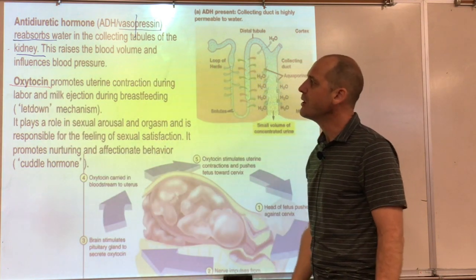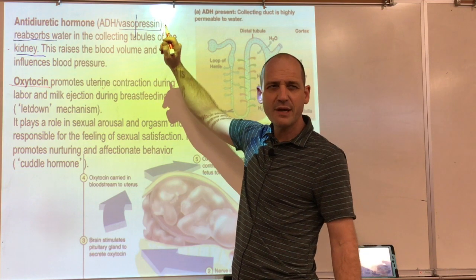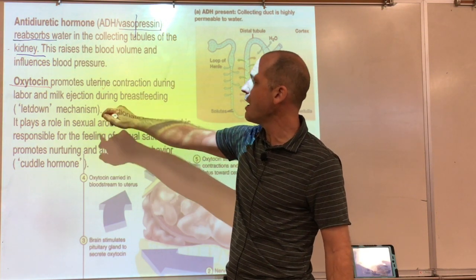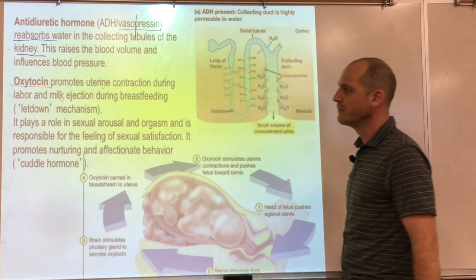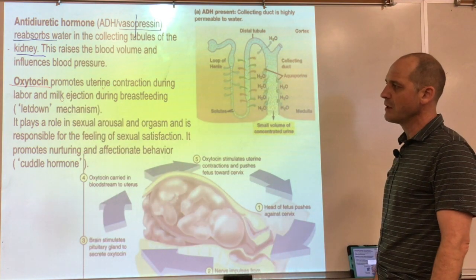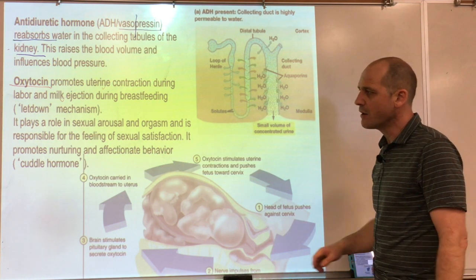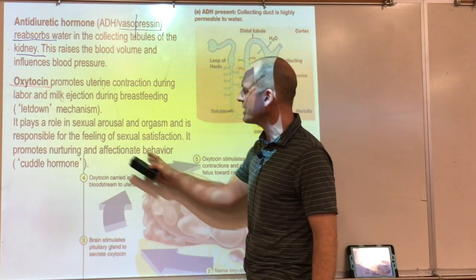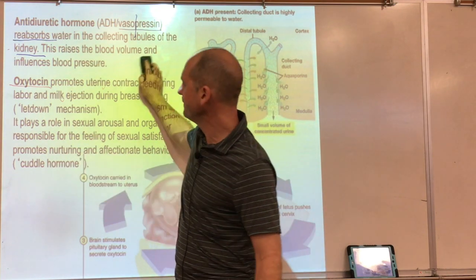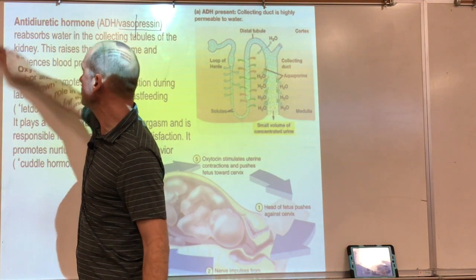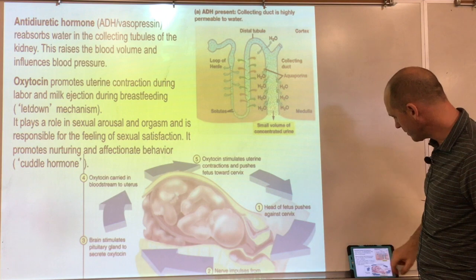Oxytocin promotes uterine contractions — well known from labor — and also stimulates milk ejection during breastfeeding. It plays a role in sexual arousal and orgasm and is responsible for feelings of sexual satisfaction. It's sometimes called the 'cuddle hormone' and is a very important hormone.